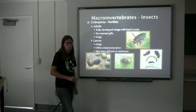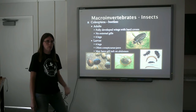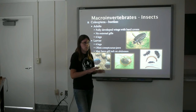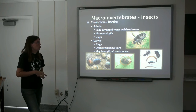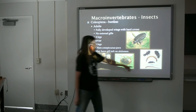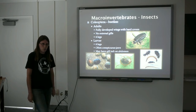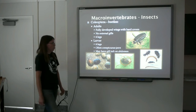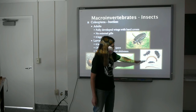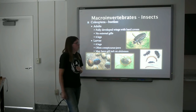Coleoptera are the beetles — a pretty large group. Most are a hard-shelled insect. Aquatic beetles look very similar to terrestrial beetles. They have a pair of fleshy, thin, membranous wings underneath the hard-shelled wings — fully developed wings with hard covers. No external gills — we're not going to see any gill flaps or gill filaments. Six legs: even the larval forms will have six segmented visible legs. They often have very conspicuous jaws and won't hesitate to bite you. The larvae may have a tuft of gills on their abdomen. This is a riffle beetle — it has a little trapdoor flap on the end of its abdomen with filamentous gills that it can open to get more oxygen.